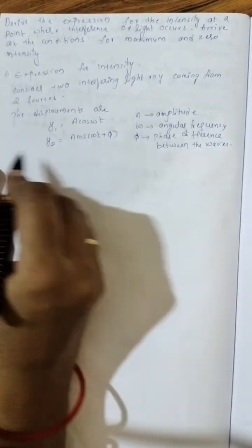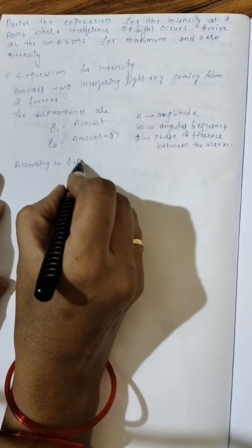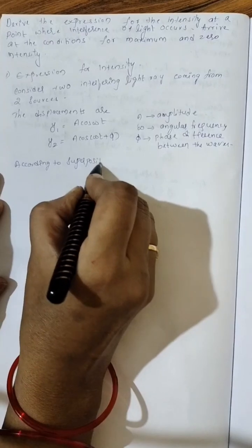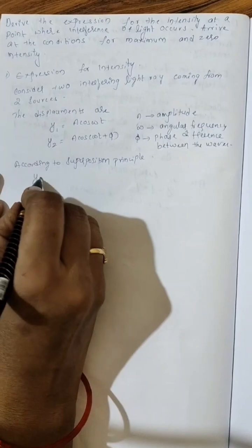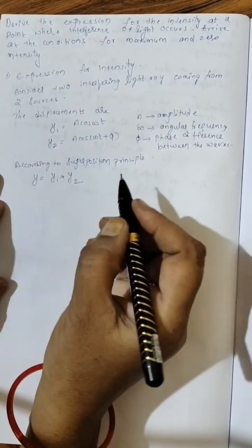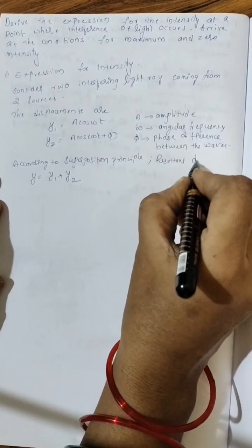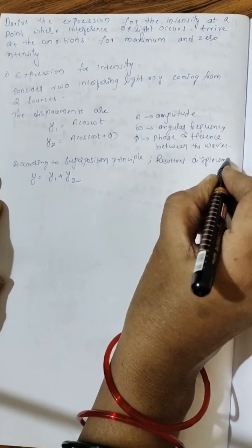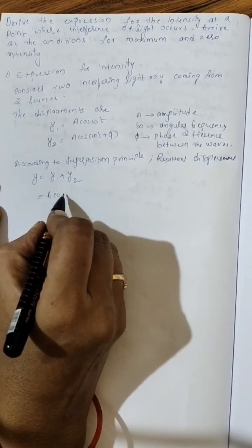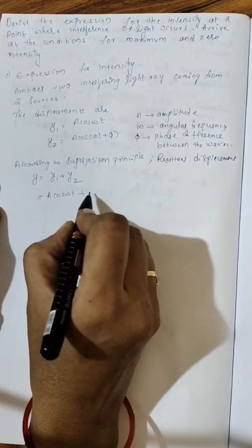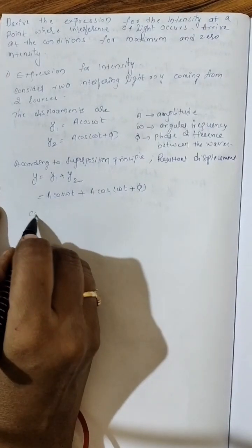Now, according to superposition principle, resultant displacement is equal to the summation of individual displacements. So Y equal to Y1 plus Y2. Substitute the values: Y1 is A cos omega t, Y2 is A cos omega t plus phi.